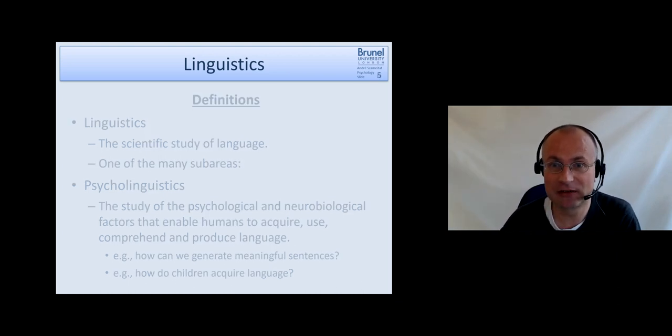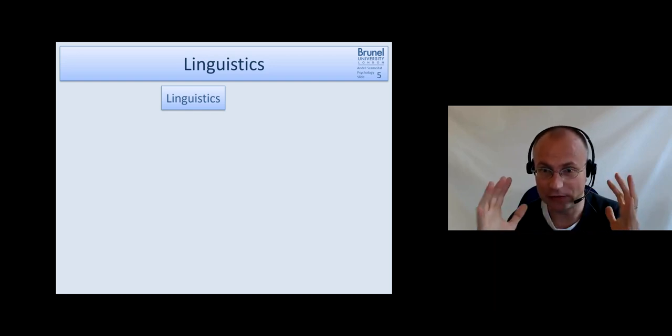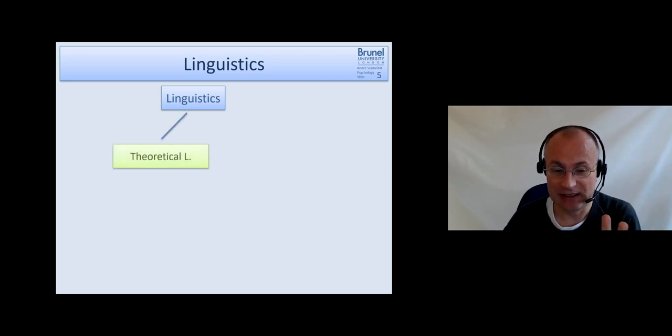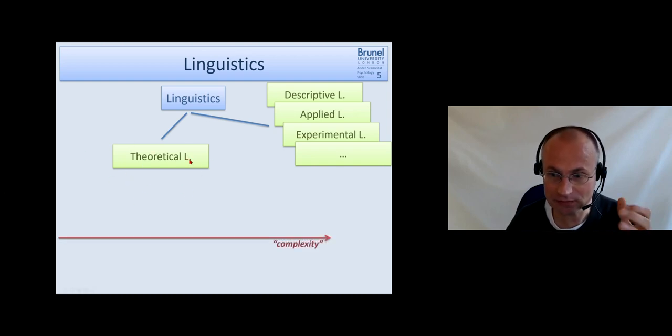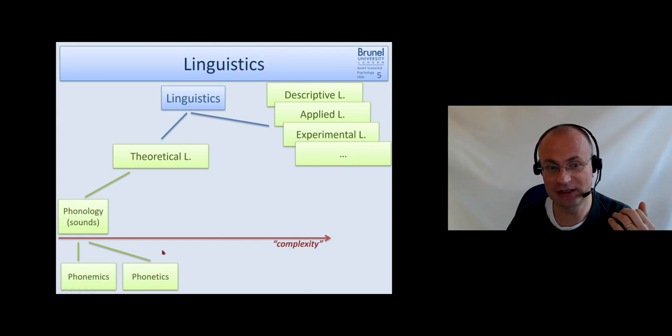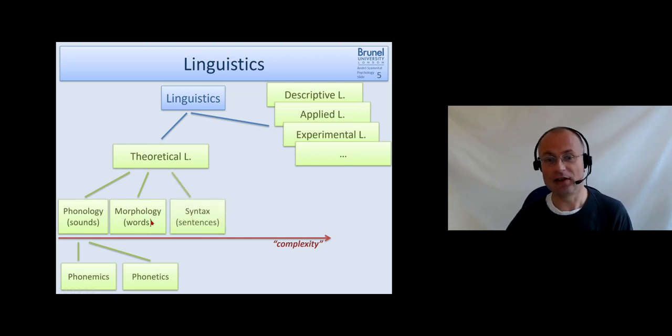When we create a scheme or tree of linguistics as the whole scientific study of language, we will look mainly at theoretical linguistics. There are also many other areas like descriptive linguistics, applied linguistics, and experimental linguistics. This area of theoretical linguistics has different sub-areas which can be sorted on a trajectory of complexity. We will start with phonology, which is about the sounds. This can be further subdivided into phonetics and phonemics. Then these different sounds can be combined to form words, so the study of words is called morphology. Words can be combined into sentences, and the structure of sentences is called syntax.